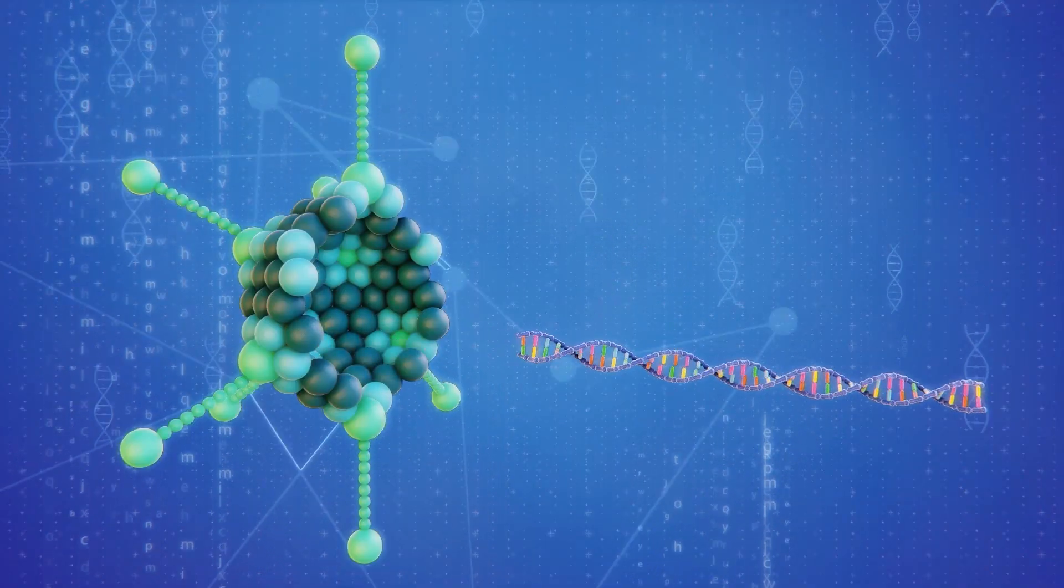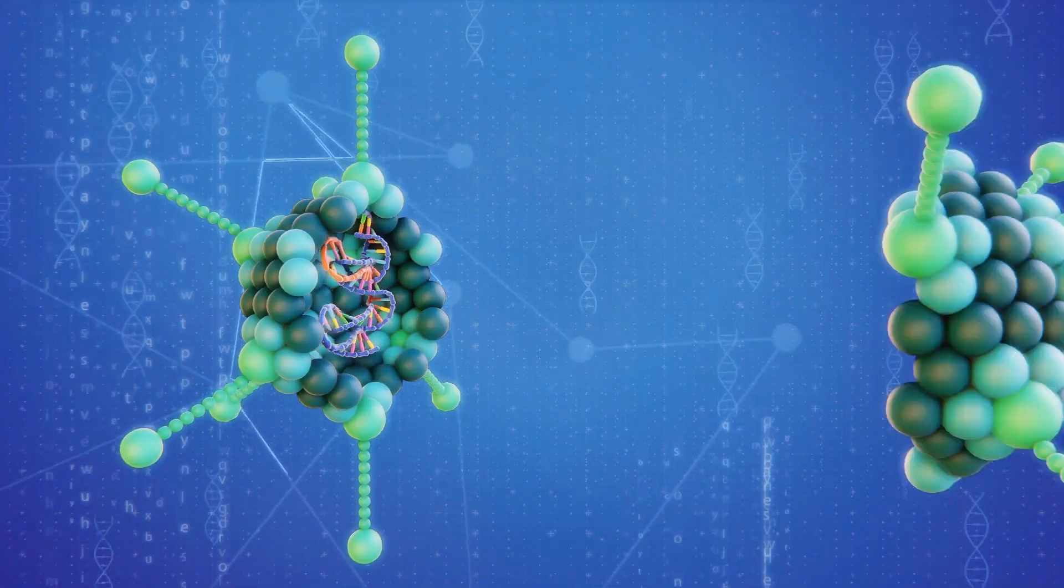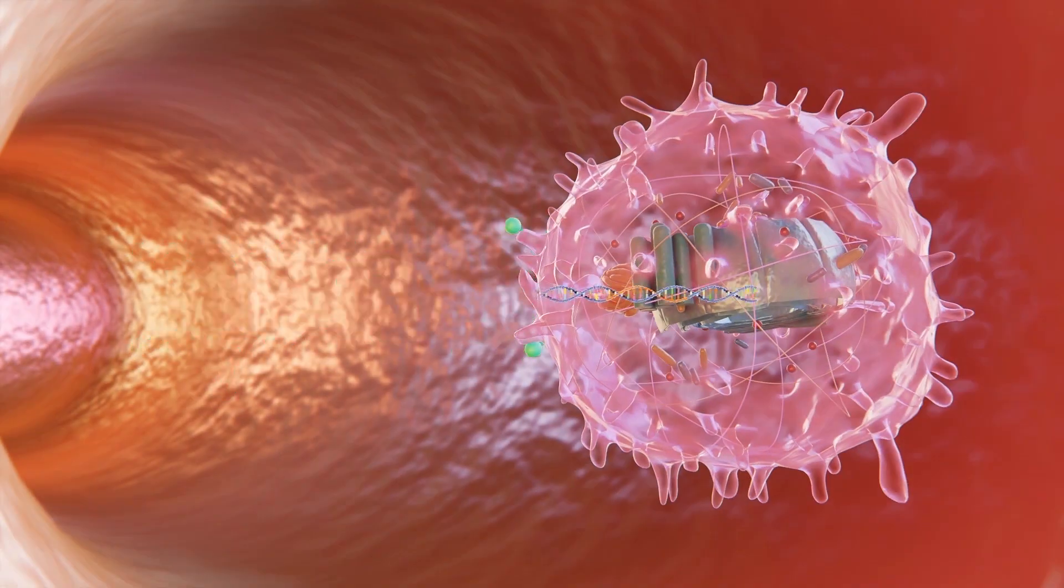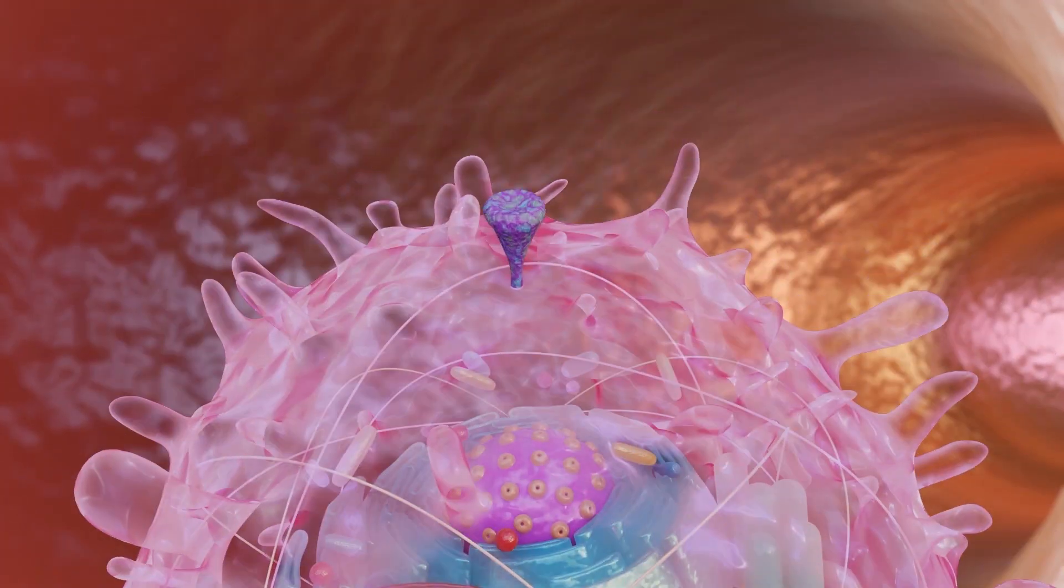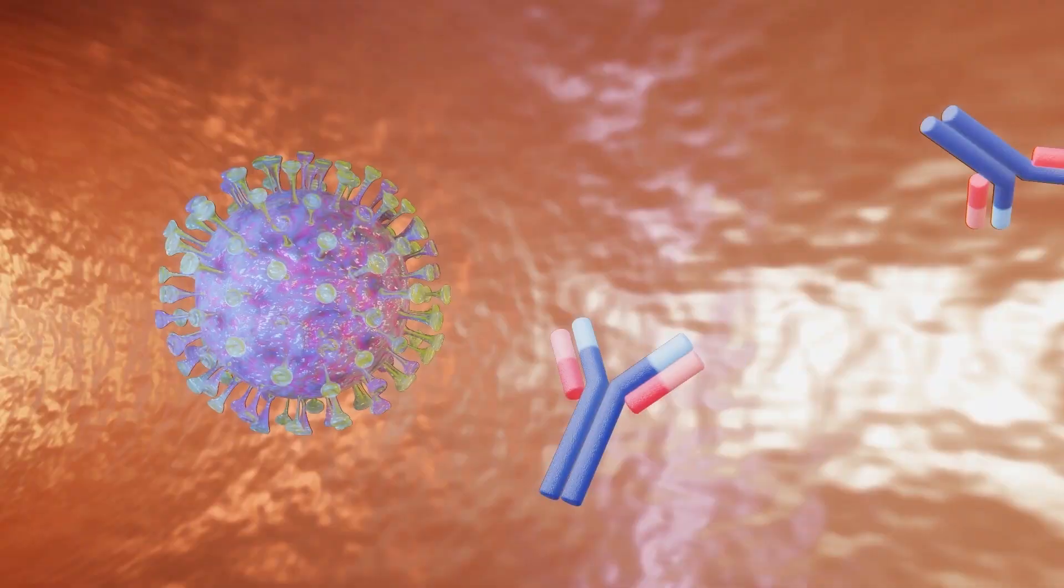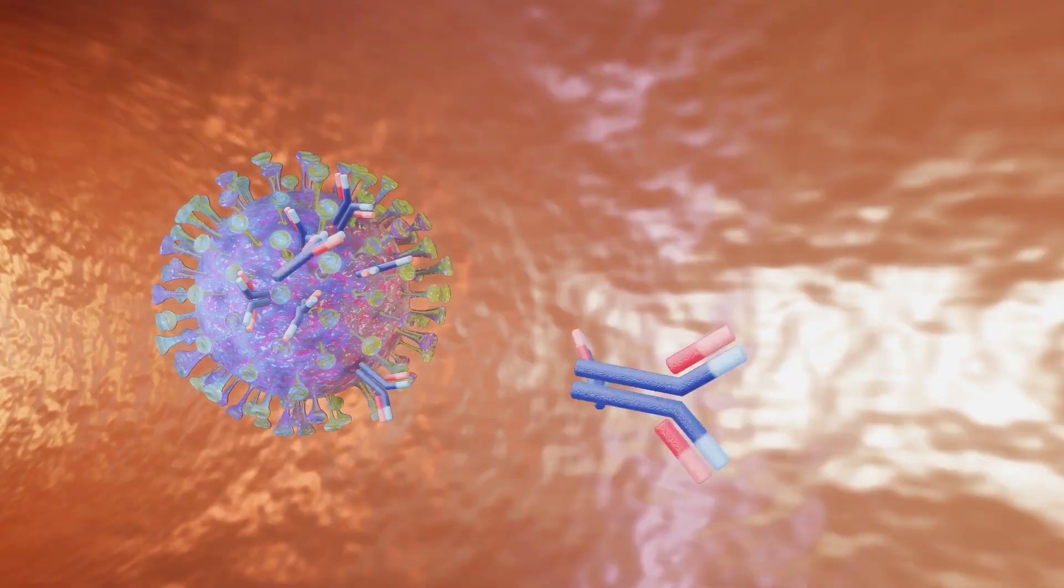The University of Oxford's vaccine uses a genetically modified common cold virus from chimpanzees to carry blueprints for the coronavirus spike protein. This virus vector then helps program an immune response against a real coronavirus.